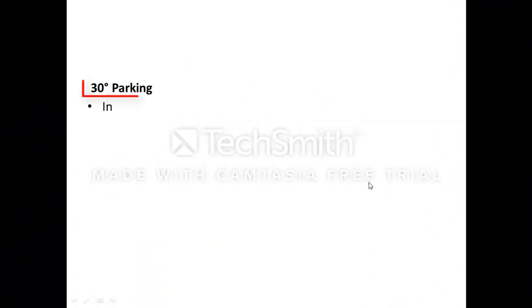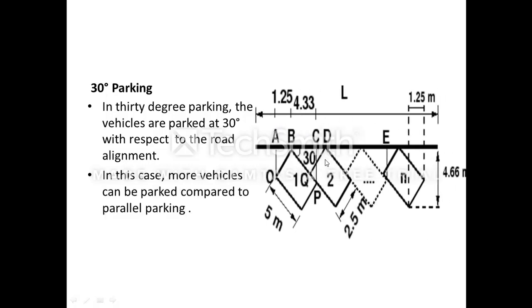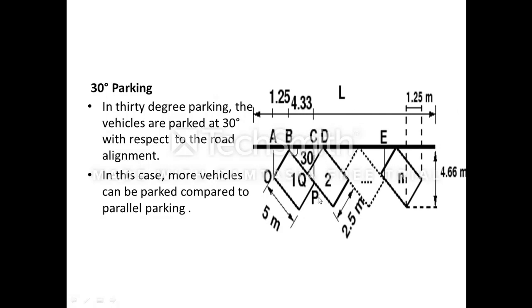The second one is 30-degree parking. In 30-degree parking, the vehicles are parked at 30 degrees with respect to the road alignment. In this case, more vehicles can be parked compared to parallel parking. This is your main road and this is your parking area. A vehicle is parked at 30 degrees; the length is 5 meters and the breadth is 2.5 meters.